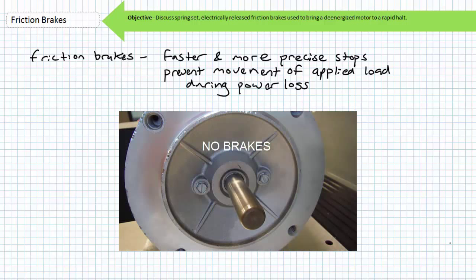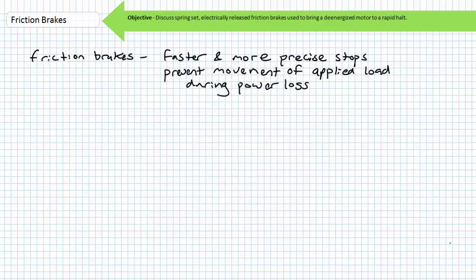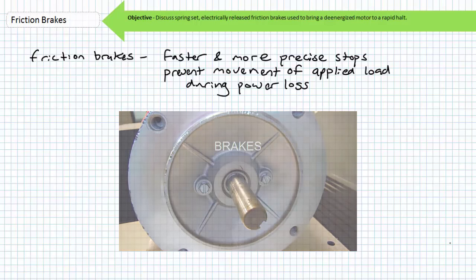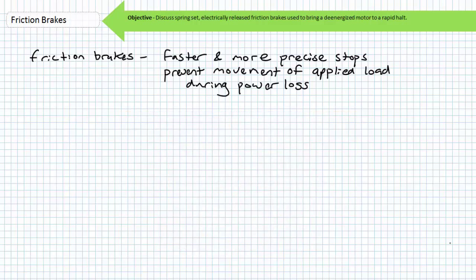A de-energized motor ordinarily free spins to a halt. Friction brakes, in contrast, are used to bring a de-energized motor to a rapid halt. Friction brakes can therefore provide a faster and more precise means of stopping a motor. Additionally, friction brakes serve to secure the shaft and applied load of a de-energized motor. Applications for friction brakes include lifting and securing objects against the force of gravity and preventing the applied load from movement during power loss.